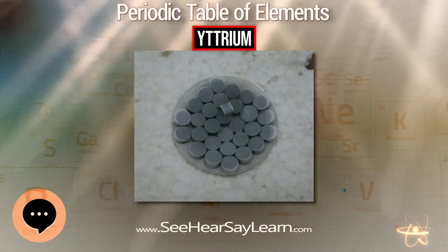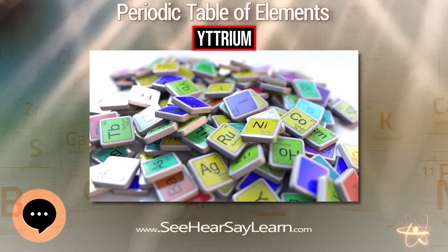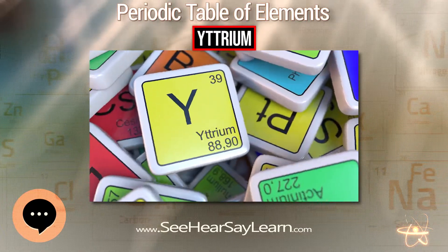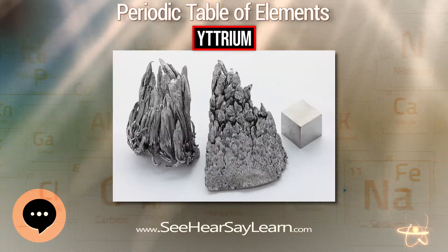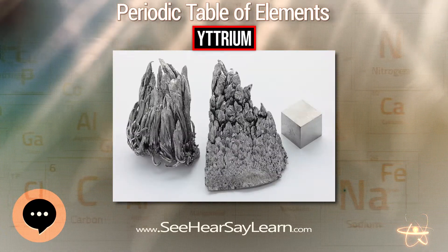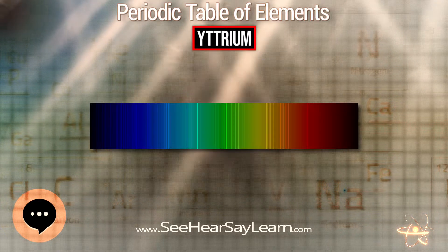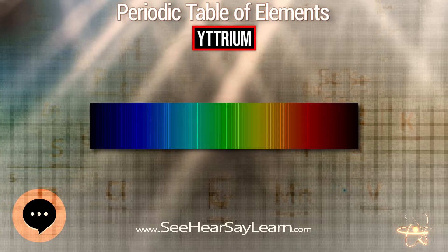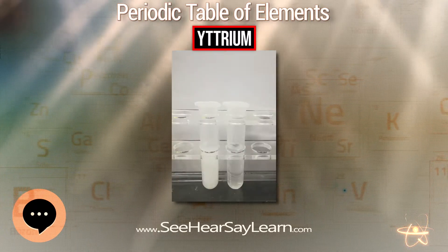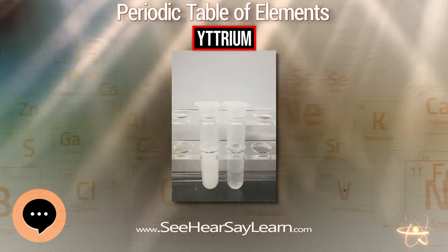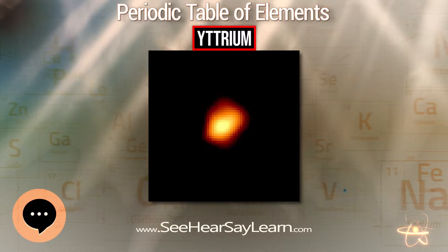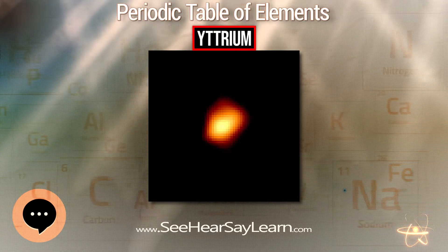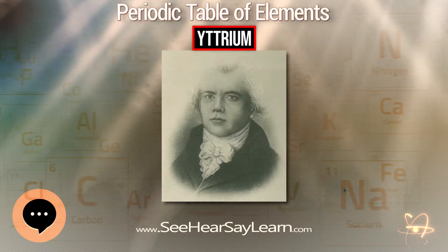As a trivalent transition metal, yttrium forms various inorganic compounds generally in the oxidation state of +3 by giving up all three of its valence electrons. A good example is yttrium oxide, also known as yttria, a six-coordinate white solid. Yttrium forms a water-insoluble fluoride, hydroxide, and oxalate, but its bromide, chloride, iodide, nitrate, and sulfate are all soluble in water.